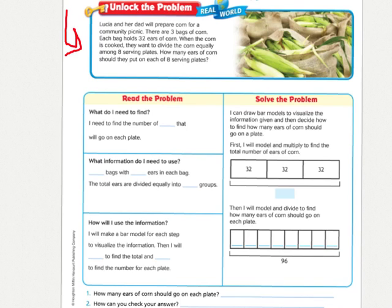So this has multi-step. We're going to have to do two different problems in order to solve this. Whenever we have word problems, we want to make sure that we know the important information. We can do that by asking ourselves, what do I need to find, what information should I use, and how will I use the information?